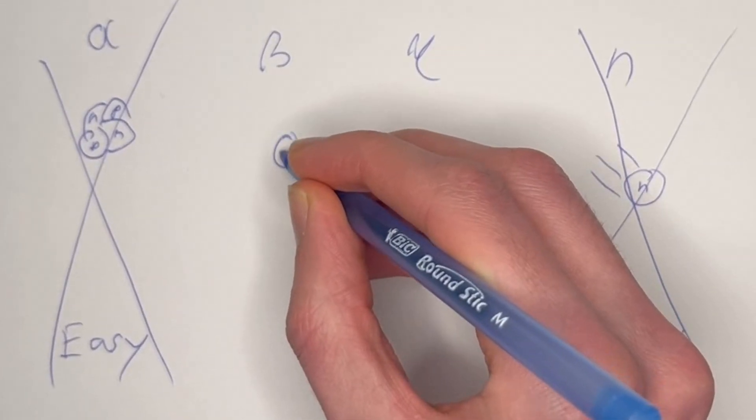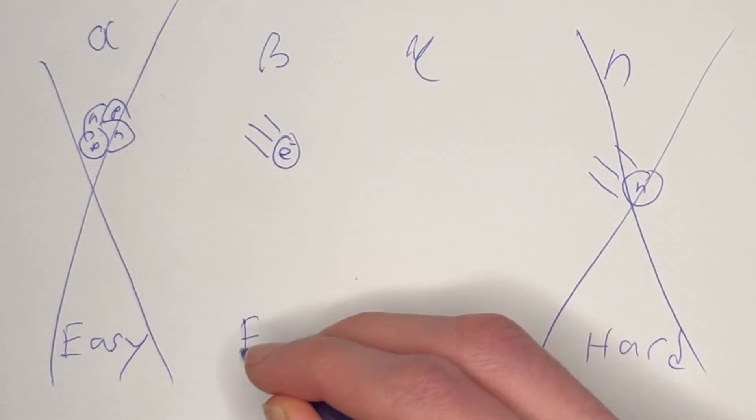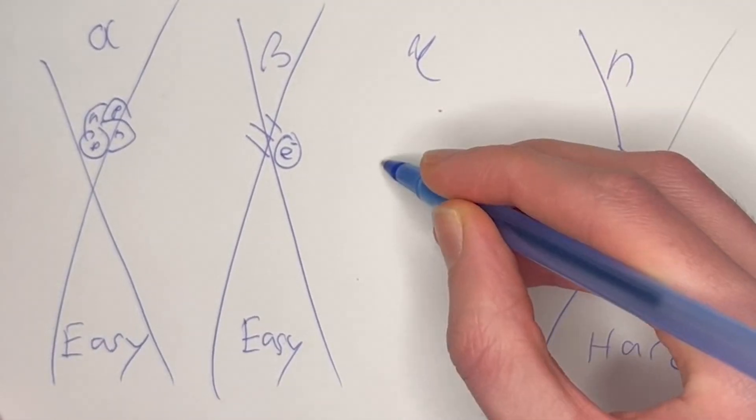Beta particles are just electrons that are going really fast. They're also pretty easy to stop. We don't worry about them.